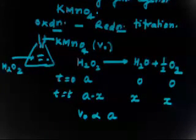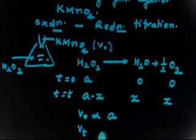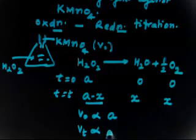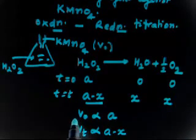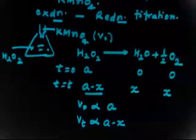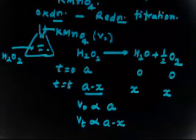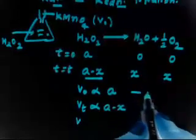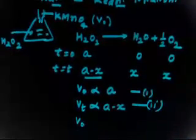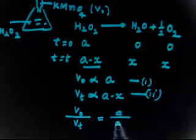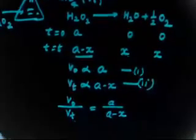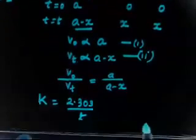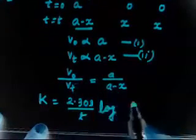After some time T, the volume of KMnO4 used is VT, which is proportional to A−X, because some H2O2 has already been oxidized. So V0 is the volume of KMnO4 at T=0, and VT is the volume at time T. Dividing these two equations gives V0/VT = A/(A−X). Since the rate constant K = 2.303/T × log(A/(A−X)), we can substitute to get K = 2.303/T × log(V0/VT).